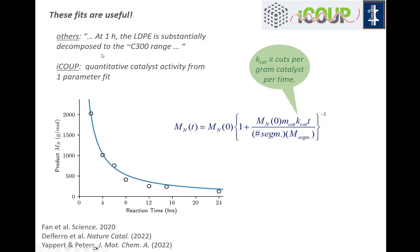That is a transferable quantity that can be compared across experiments in different labs with different amounts of catalysts and different amounts of polymer. You can even use that quantity to compare how different catalysts work on the same polymer or how one catalyst works on different polymers. It's been a really useful and transferable way of understanding our kinetics from the average molecular weight evolution.